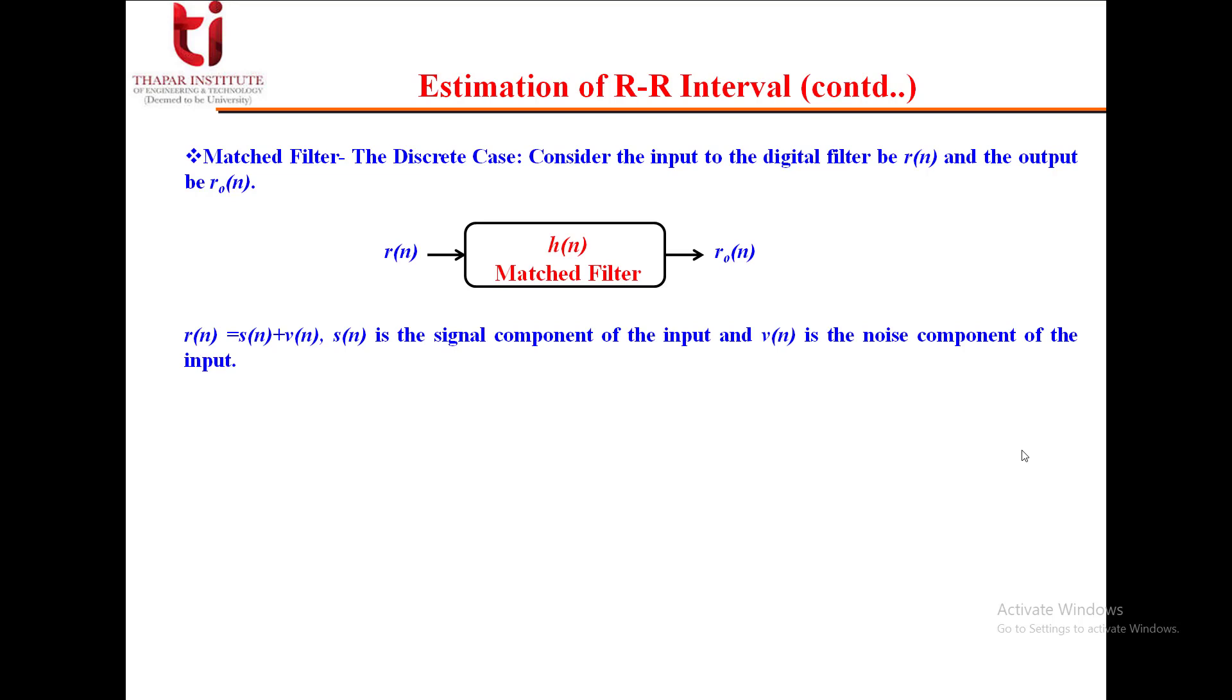Consider the input to the digital filter be R(n) and the output be R0(n). R(n) is the sum of the signal component S(n) and noise component V(n) of the input. It will produce R0(n), which is represented as S0 plus V0, the signal and noise output constituents respectively.